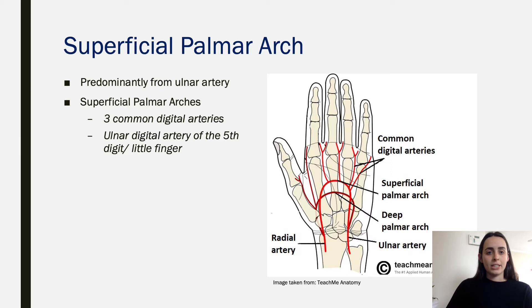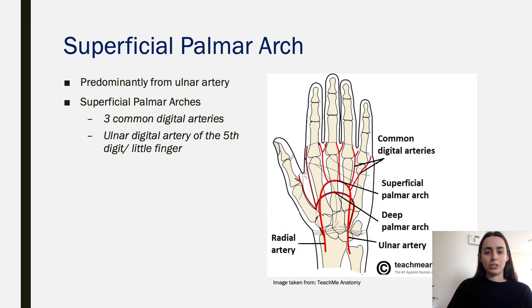With the superficial palmar arch, the main blood supply is from the ulnar artery. As you can see in the diagram on the right, the superficial palmar arch separates into three common digital arteries going along digits two, three, and four, and also divides off into the ulnar digital artery of the fifth digit — the little finger — so it has its own branch there. These are very important and the main blood supply is all coming from the ulnar artery.